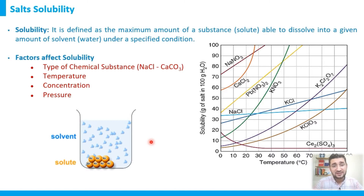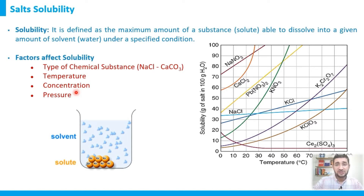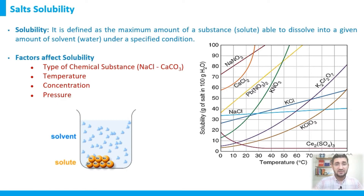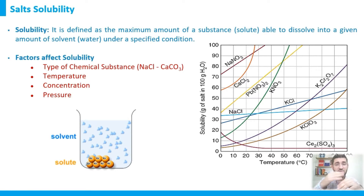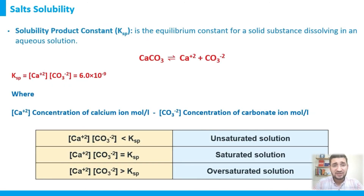The third factor is concentration. The higher the salt concentration, the lower the solubility. We go from undersaturation, to saturation, to oversaturation. The fourth factor, which affects only a few salts, is pressure. When pressure increases, solubility may increase, but this applies to a limited number of salts only.